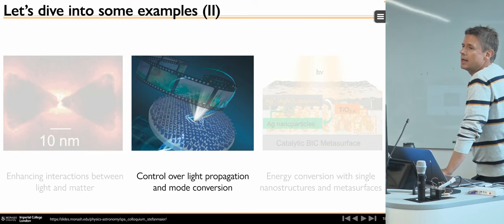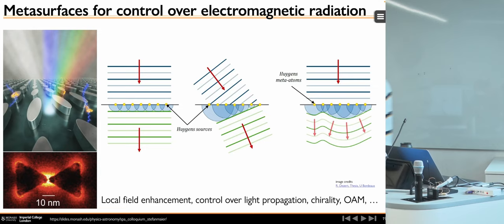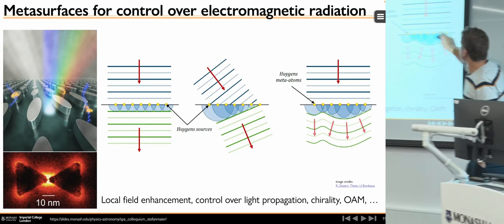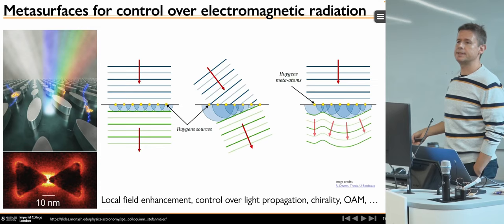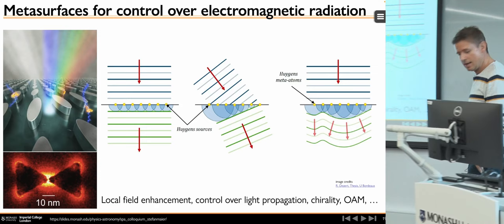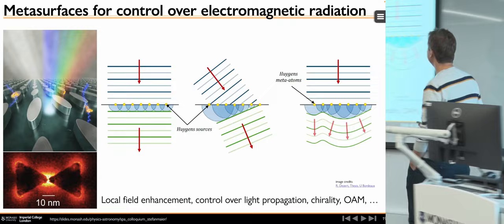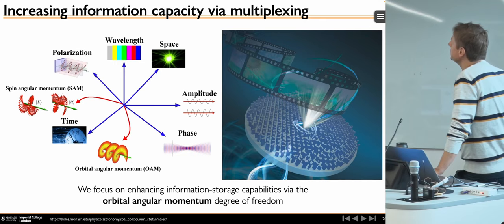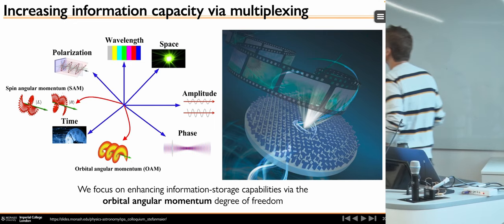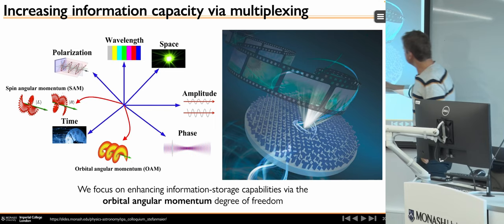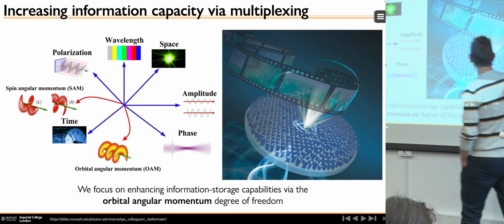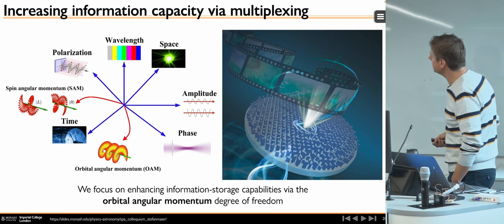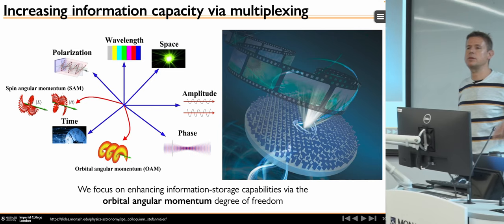Now briefly on light propagation and mode conversion. We arrange nanostructures on a surface to change how spherical Huygens waves interfere and shape wavefronts. The work I'm showing is by Haran, my Dekra fellow, who used such wavefront shaping in the context of holography — to make holographic disks where tiny elements encode computer-generated holograms. The challenges are making this process efficient and multiplexing it, so that many different images can be encoded in one hologram.